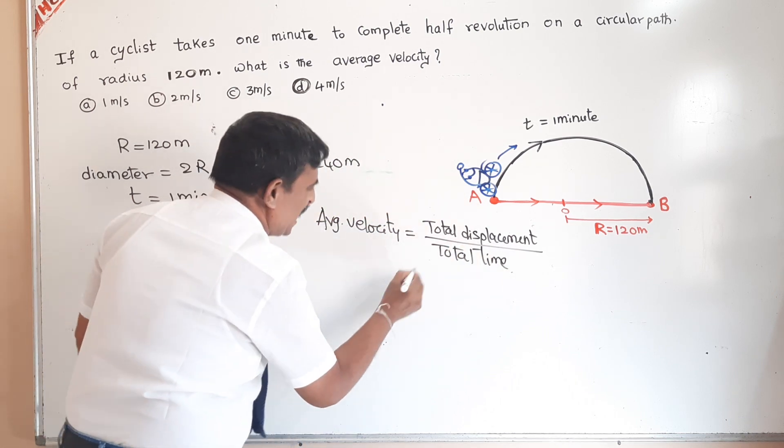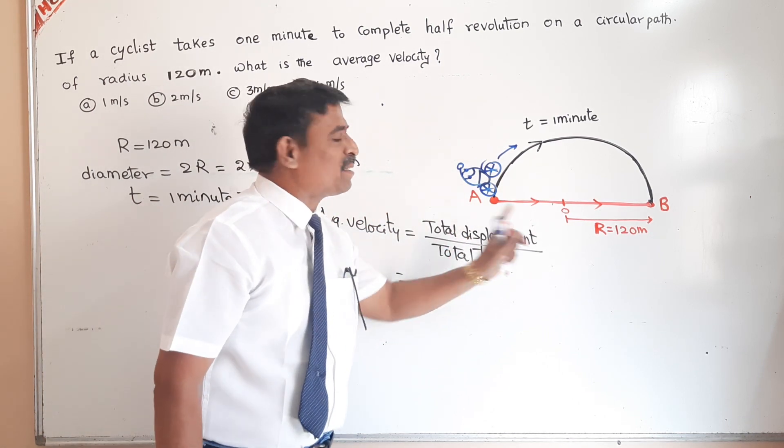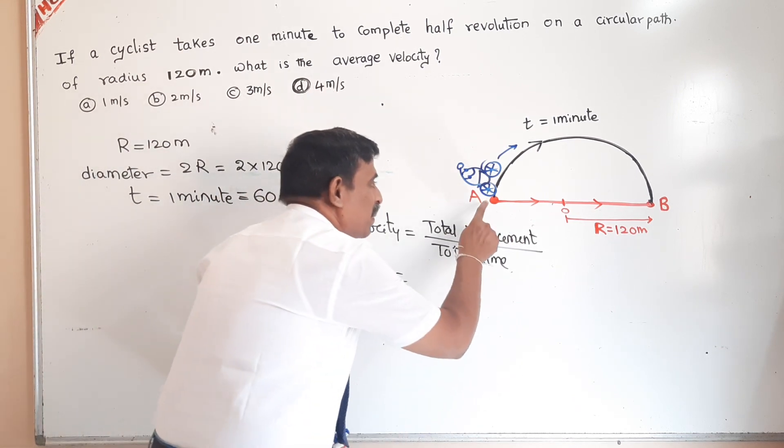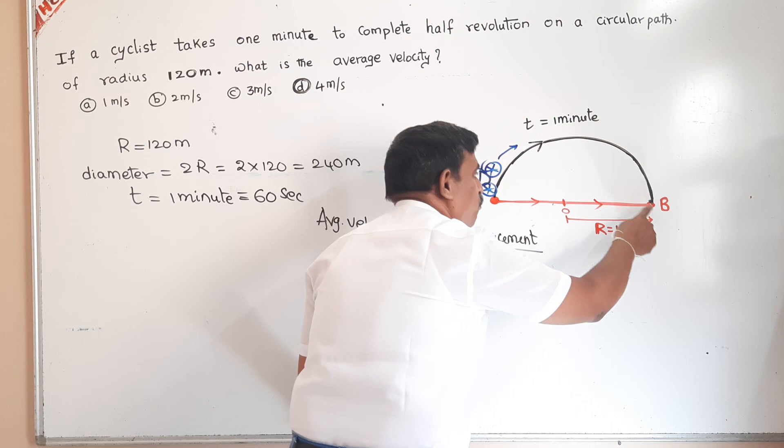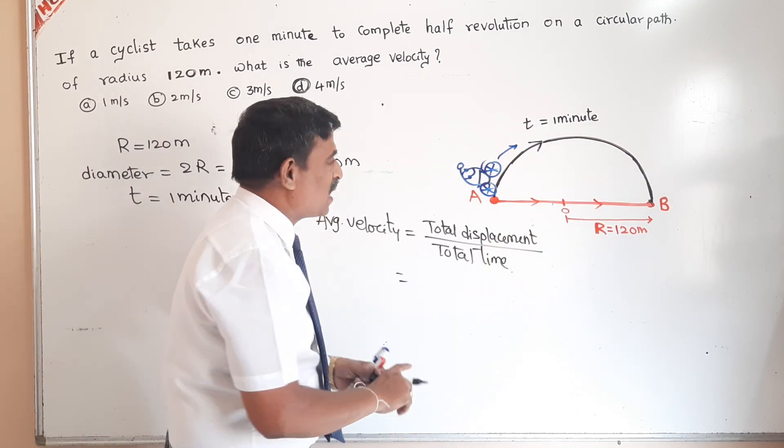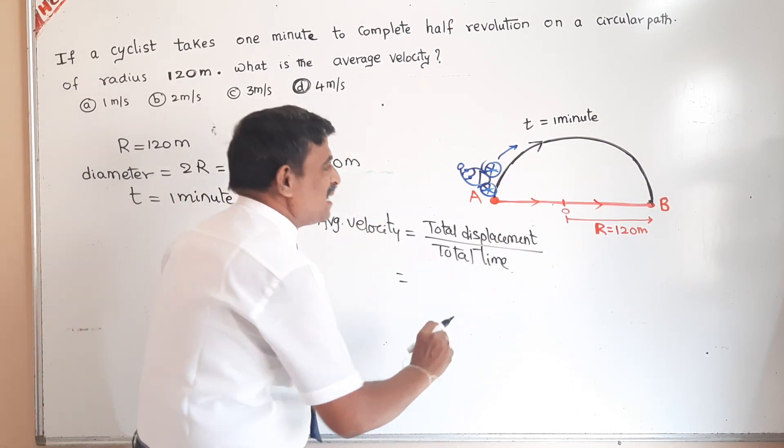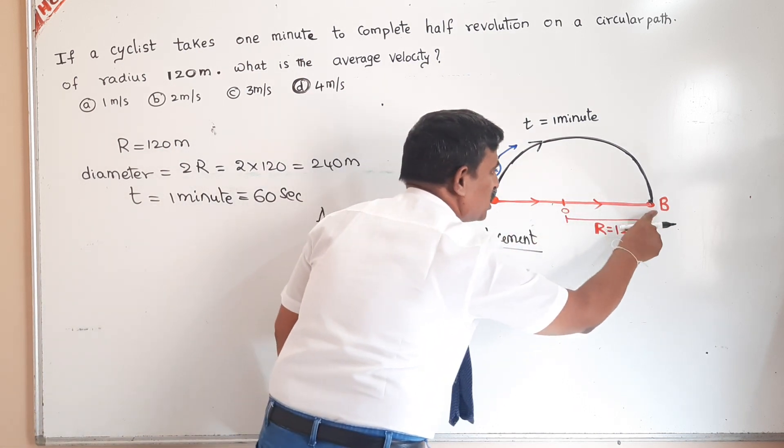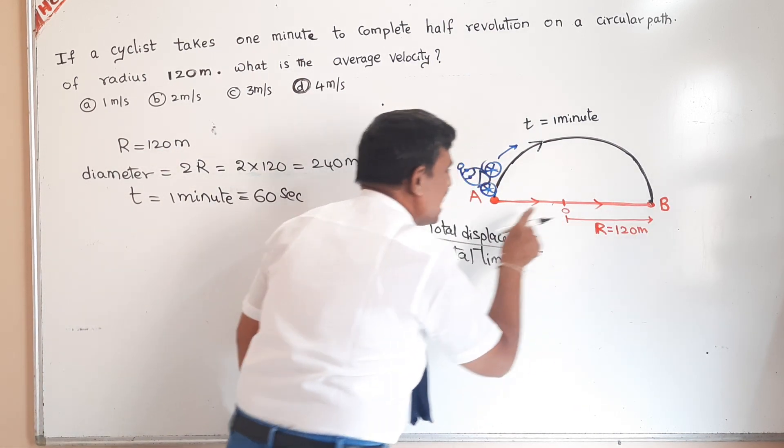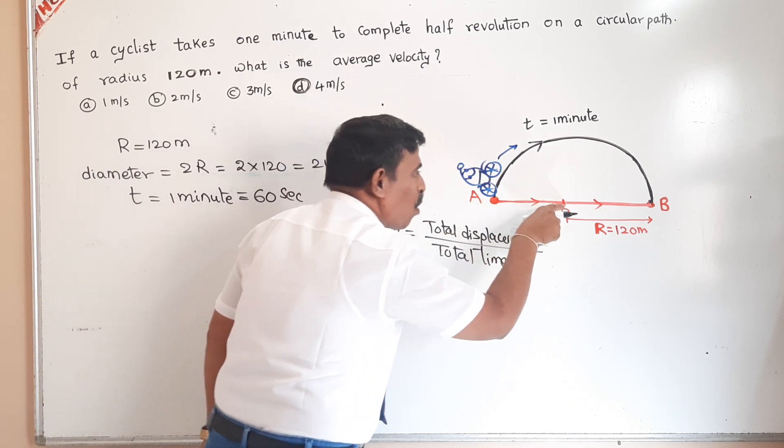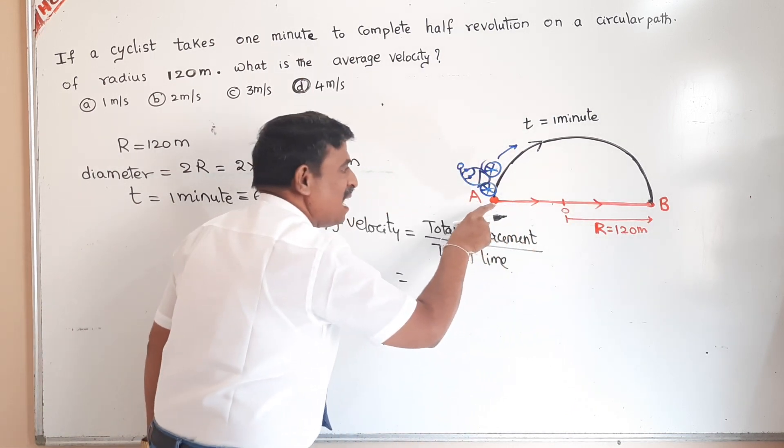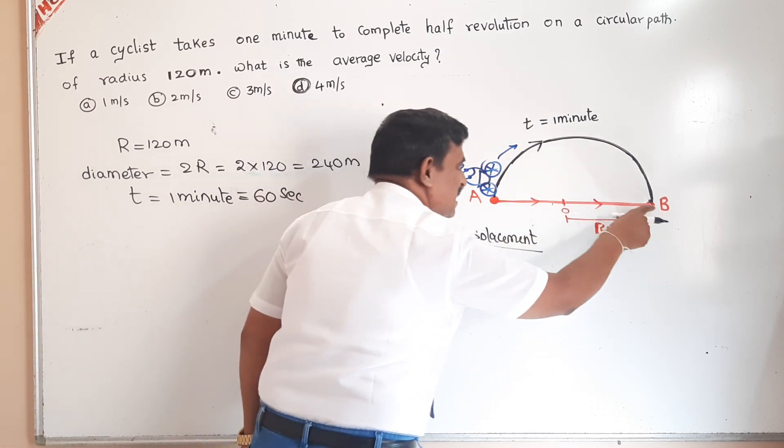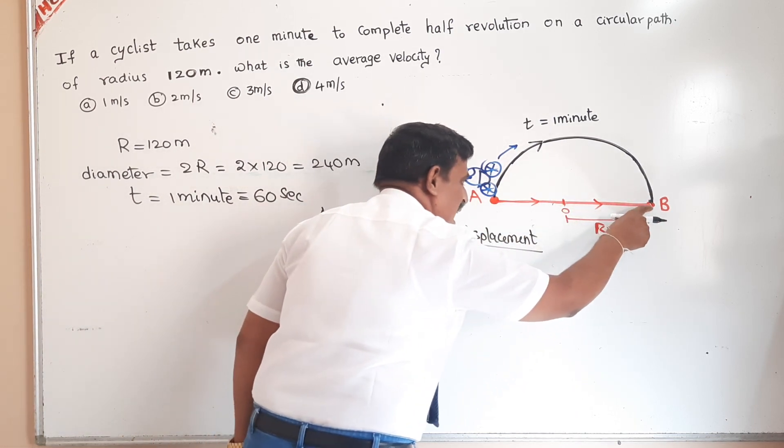Now please listen. Displacement means the shortest distance from initial position to final position. This A-O-B is the displacement. A-O-B is nothing but diameter, which is 240 meter.